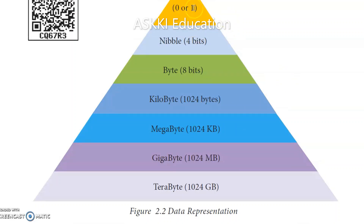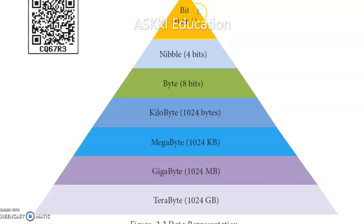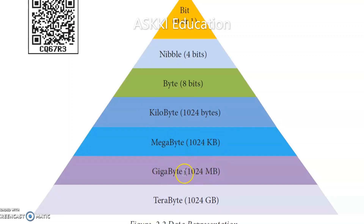In data representation, the smallest unit is a bit, which can be 0 or 1. A byte consists of 8 bits. Then, 1024 bytes together is called a kilobyte, 1024 kilobytes is a megabyte, 1024 megabytes is a gigabyte, and 1024 gigabytes is a terabyte. These form our memory measurement table.